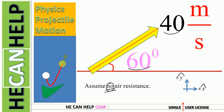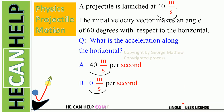Assume no air resistance. Positive x is defined as to the right, positive y is defined as vertically up. A projectile is launched at 40 meters per second. The initial velocity vector makes an angle of 60 degrees with respect to the horizontal. What is the acceleration along the horizontal? Is it 40 meters per second per second, or is it 0 meters per second per second?